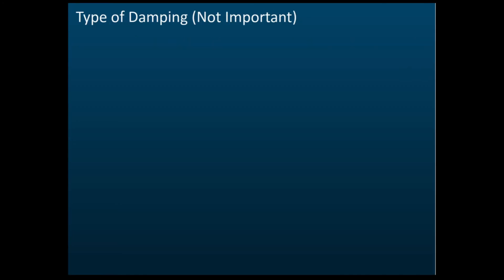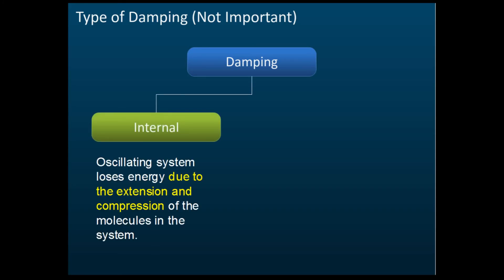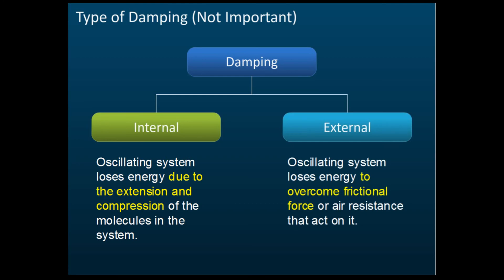There are two types of damping: internal damping and external damping. Internal damping is caused by the extensions and compressions of the molecules, while external damping is caused by frictional forces. This distinction is less important for exams, but you should know that both types exist.